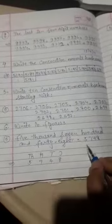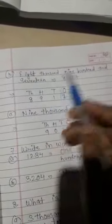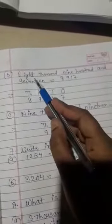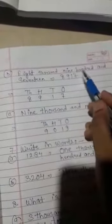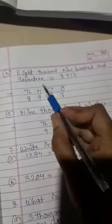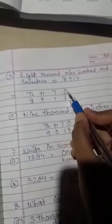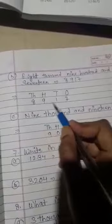Eight thousand nine hundred and seventeen. Eight thousand, write 8 in thousands place. Nine hundred, write 9 in hundreds place. Seventeen: one ten and seven ones. Right 1 in tens place and 7 in ones place. Eight thousand nine hundred seventeen.